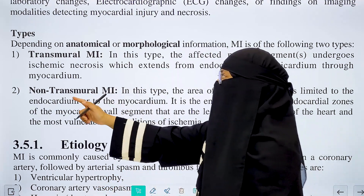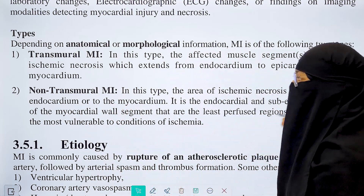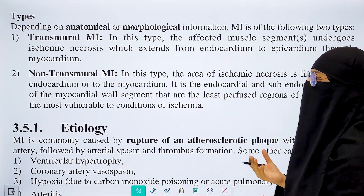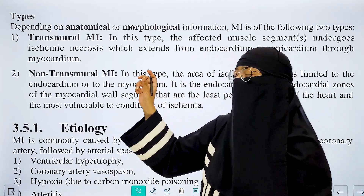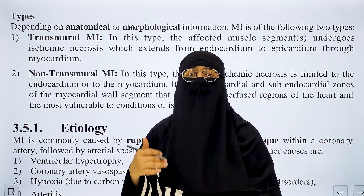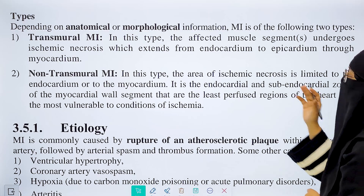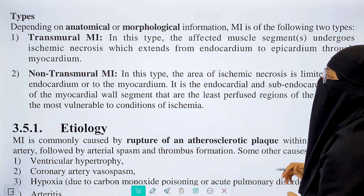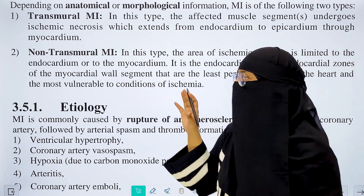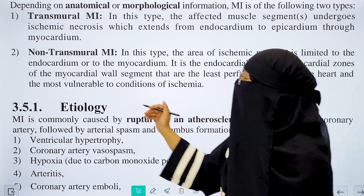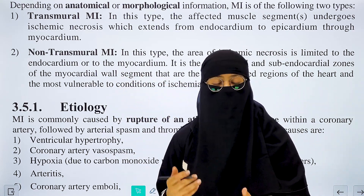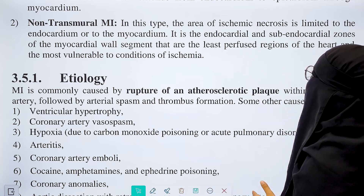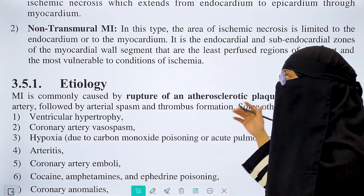There are two types of myocardial infarction. In myocardial infarction, the heart muscles are affected by systemic necrosis due to insufficient blood flow. This ranges from transmural infarction — affecting the full thickness from endocardial to epicardial — to non-transmural or subendocardial infarction, which affects only the endocardial and subendocardial regions.